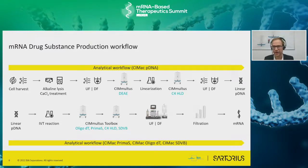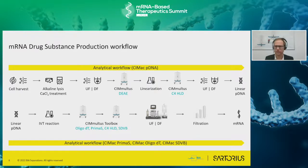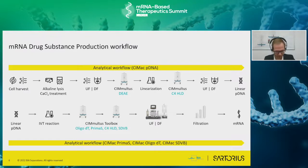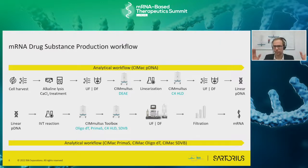When we look at the drug substance production workflow, there are many options. Traditional purification technology has been precipitation, which I'll address later along with its challenges. There are very useful tangential flow filtration solutions to isolating RNA. But we believe strongly that the technology that is really selective, scalable, and retains high stability of the product is chromatography.